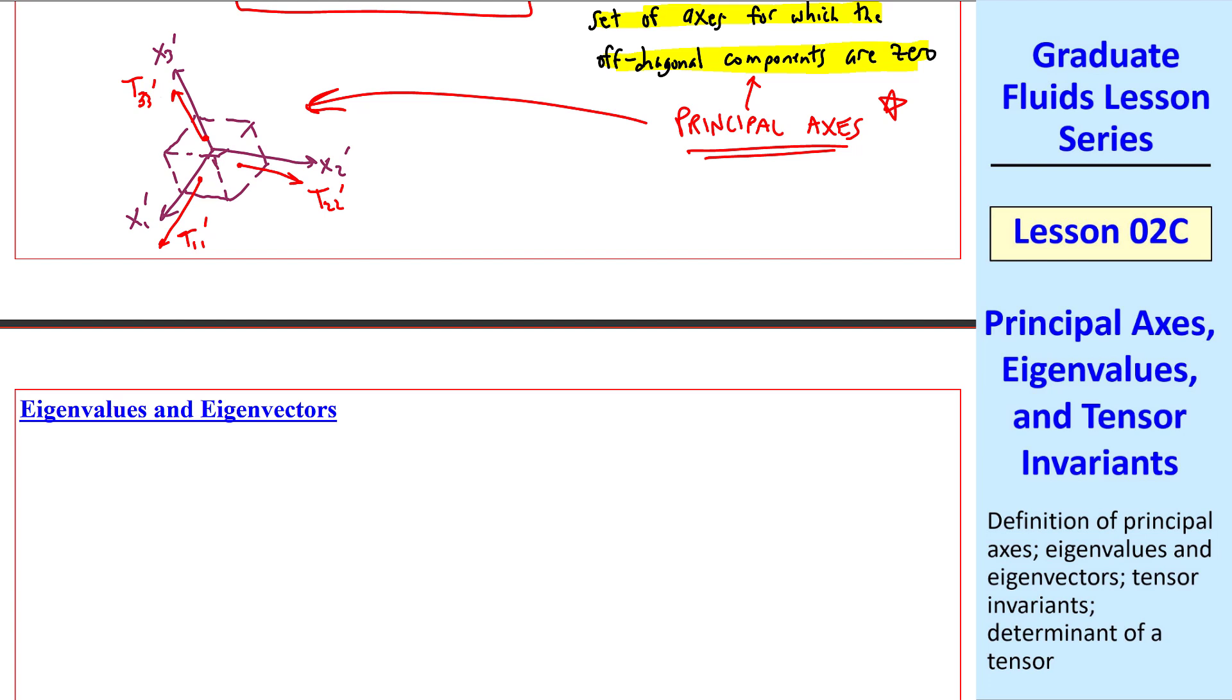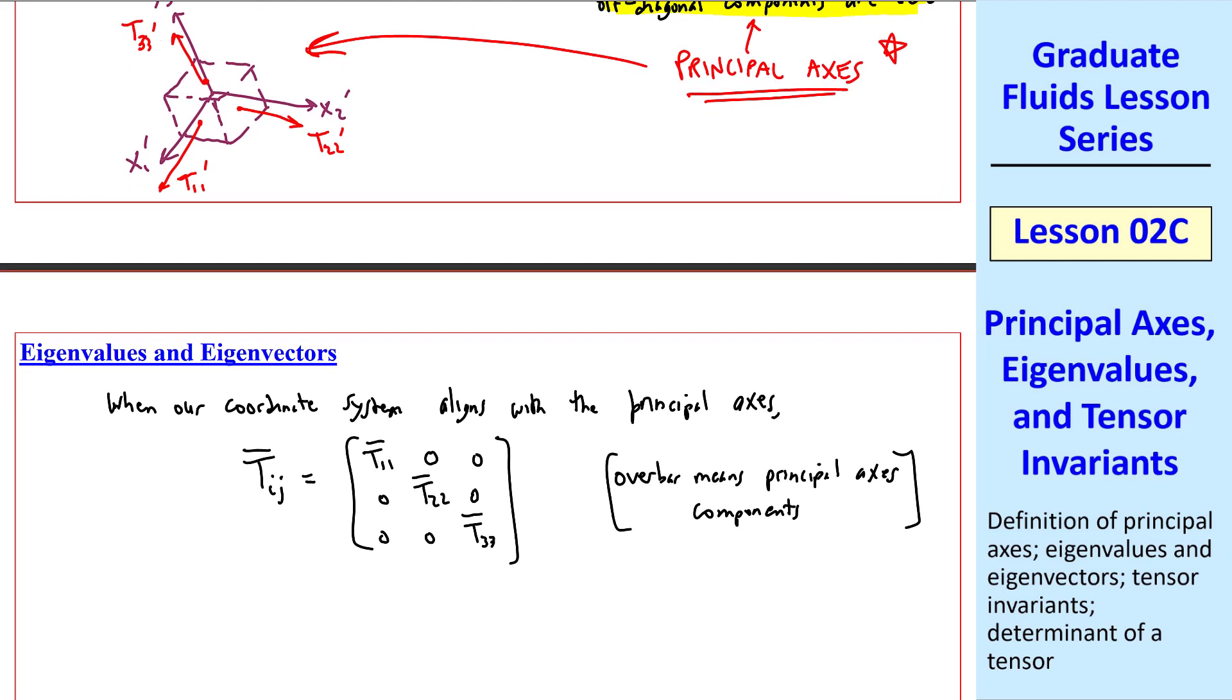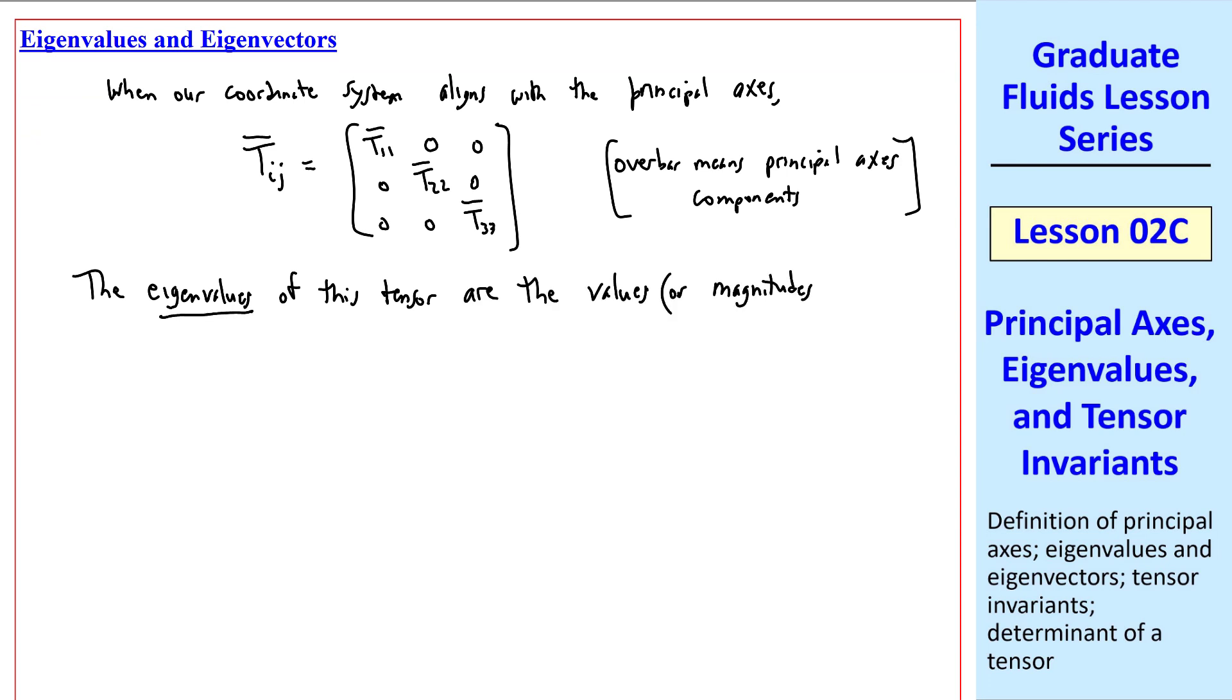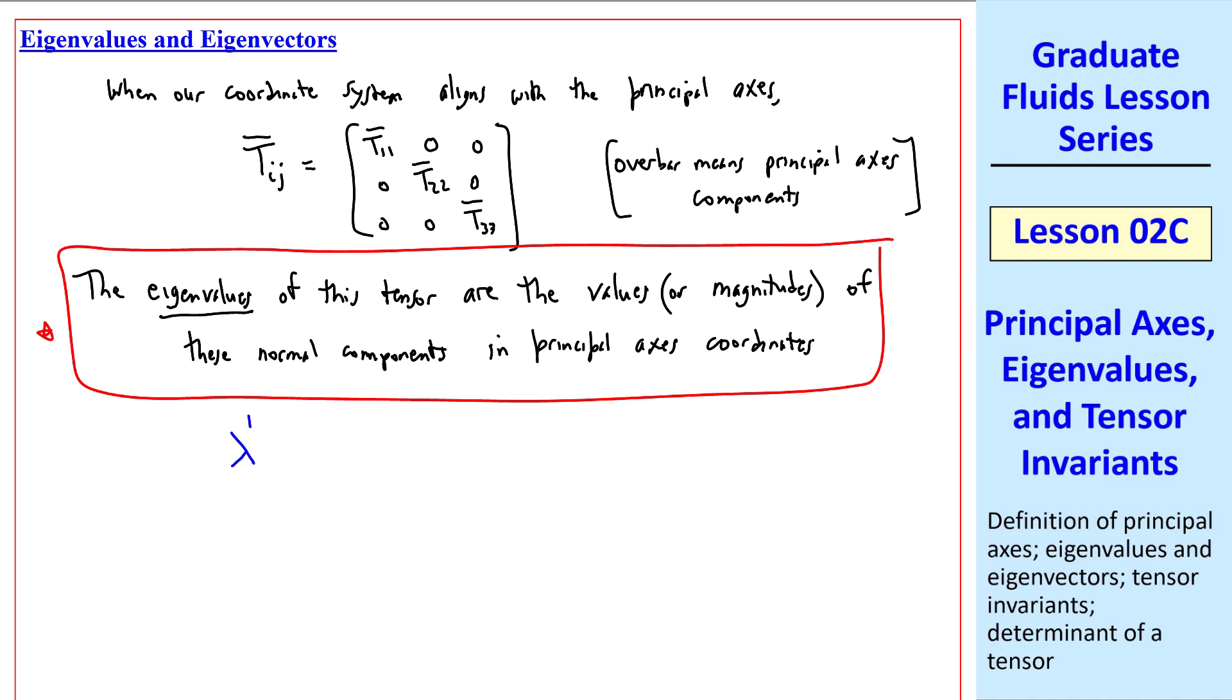Now let's discuss eigenvalues and eigenvectors. When our coordinate system aligns with the principal axes, Tij turns out to be T11, T22, T33 on the diagonals, and zero everywhere else. We'll use an overbar to indicate that these are principal axes. Make sure you don't confuse these overbars with mean or average. Here it just means the principal components or the principal axes. Now let's define eigenvalues. The eigenvalues of this tensor are the values or magnitudes of these normal components in principal axes coordinates.